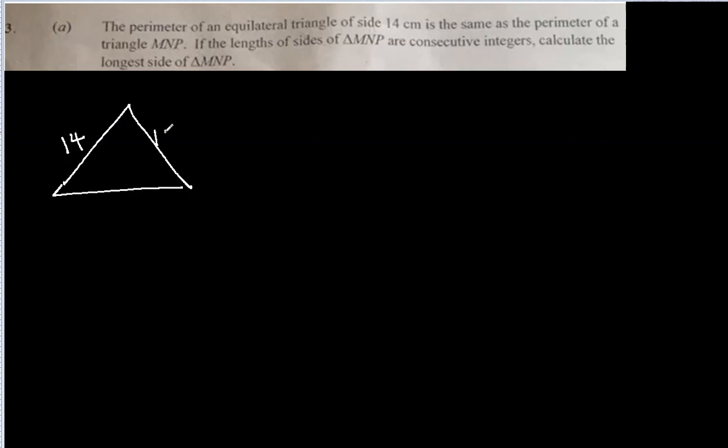3a. The perimeter of an equilateral triangle of side 14 cm is the same as the perimeter of a triangle. So let's draw an equilateral triangle first. Okay, so each side is 14, 14, and 14 cm.